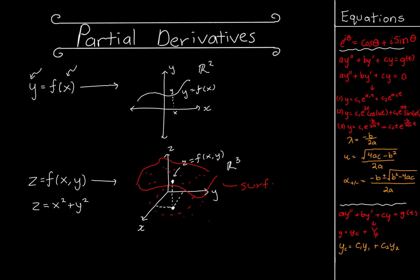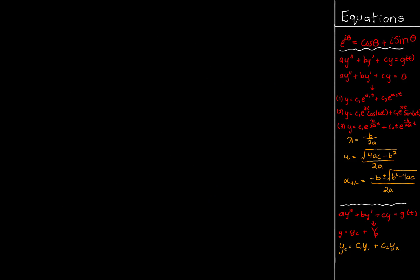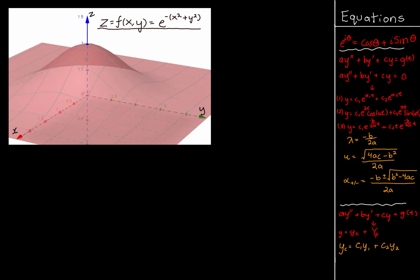You have to think about multivariable functions as having the input space be the entire xy plane — we can choose any point on it, plug it into the function, and get some z value back. The collection of all these values gives a surface. To compare: for functions of the form y equals f of x, this is a curve in R2, whereas z equals f of x y gives a surface in R3.